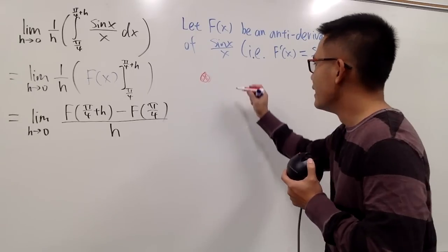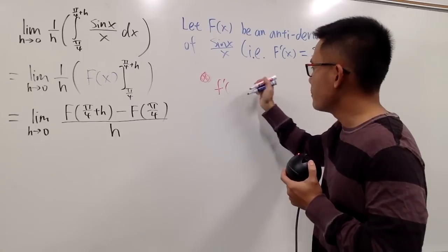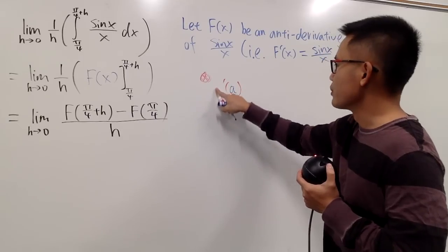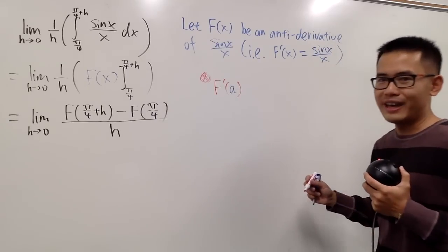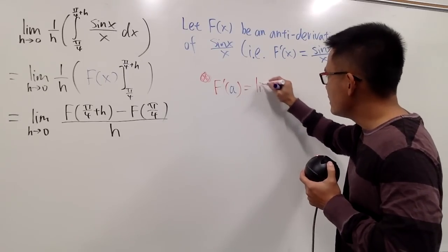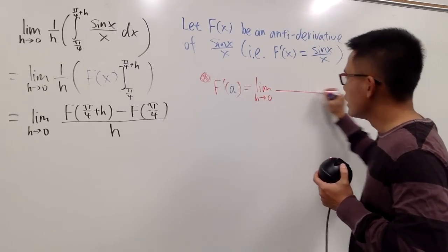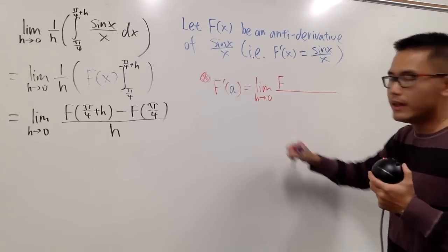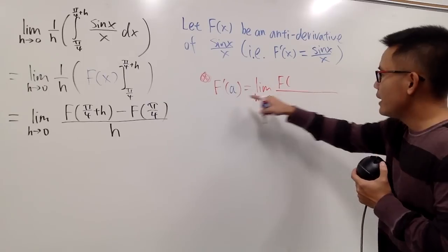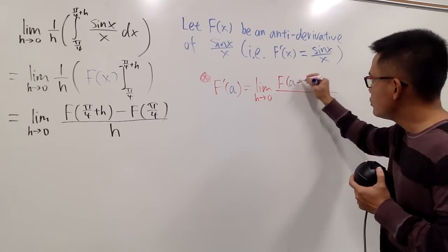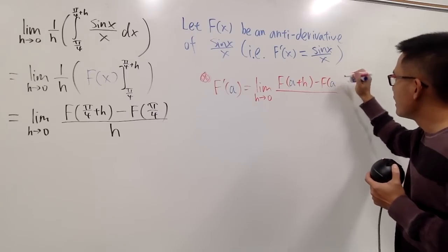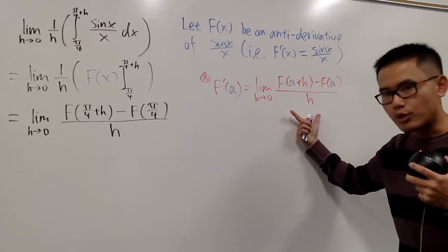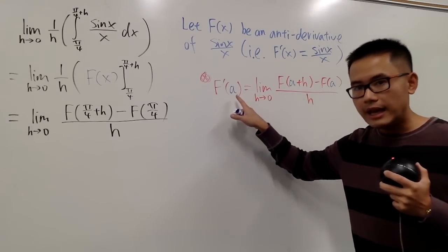Let me just recall this for you guys on the side. So recall that this is just the definition of derivative. F'(a), or capital F'(a), by definition, this is the limit as h goes to 0, and then on the top we have capital F, no prime yet, a is the input, so I put in a, and then we add h, and then we minus F(a), over h. This is the definition of derivative of capital F at x equals a.